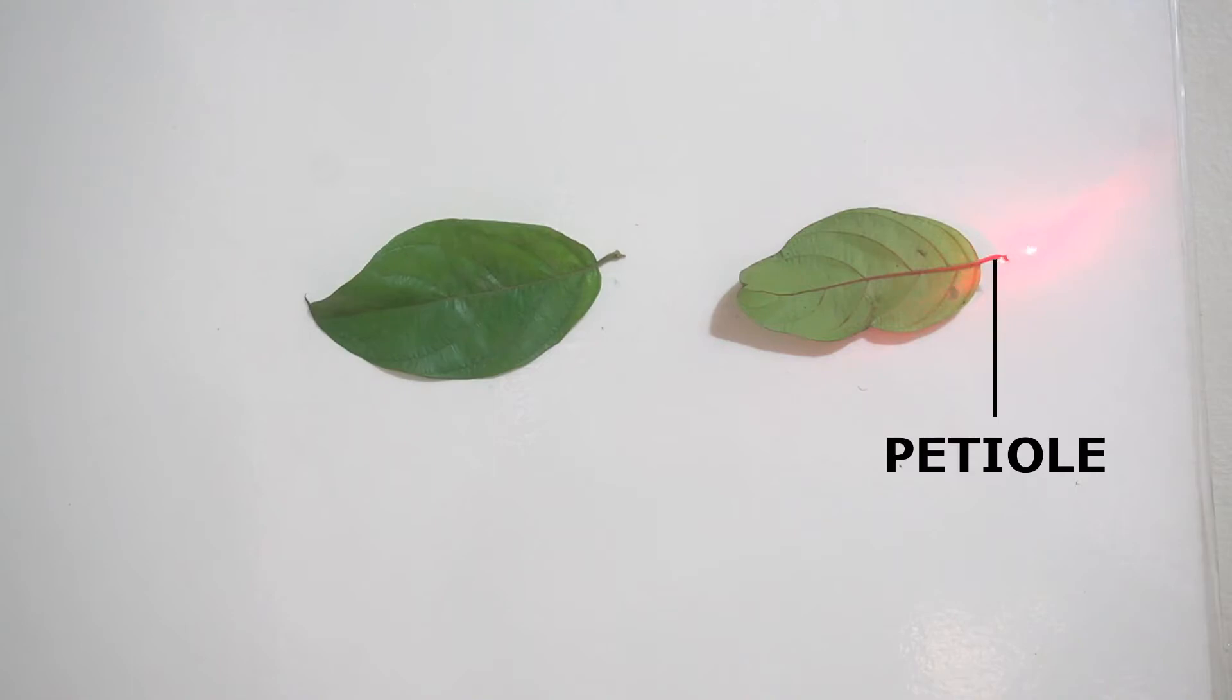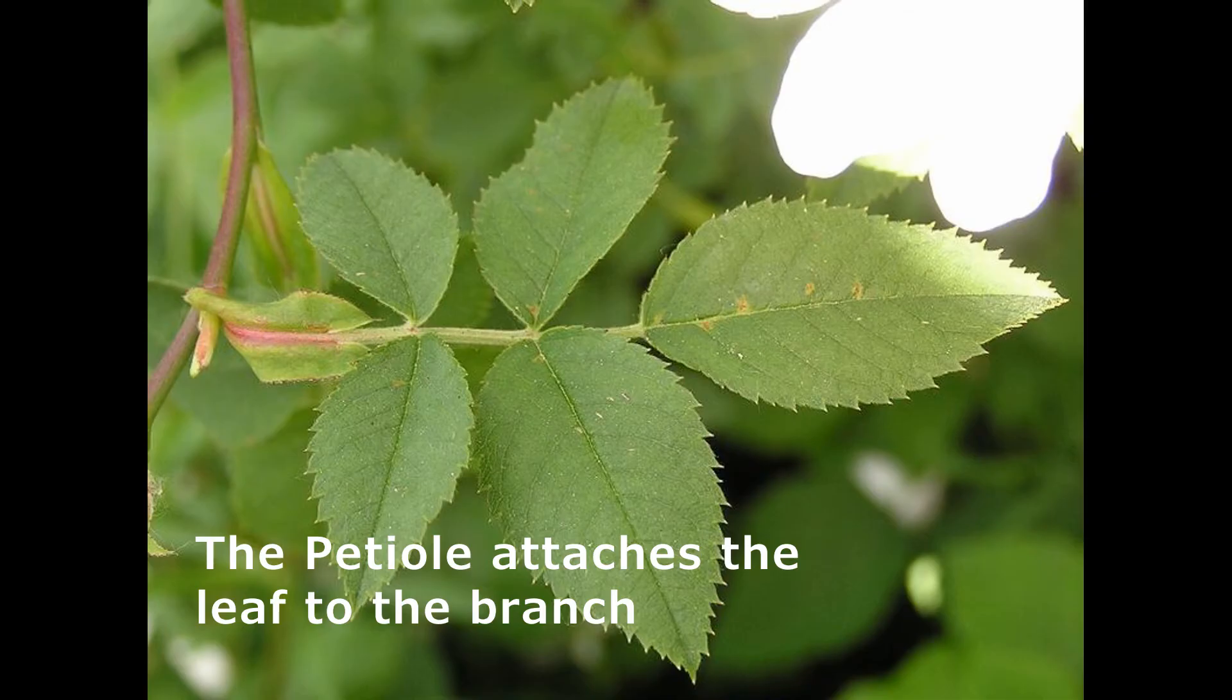And then we have the leaf stock here called petiole. This is the part that attaches the leaf to the branch. The petiole attaches the leaf to the branch.